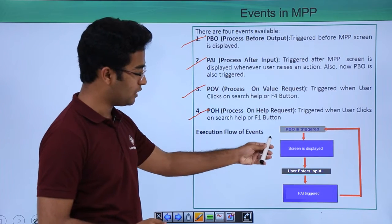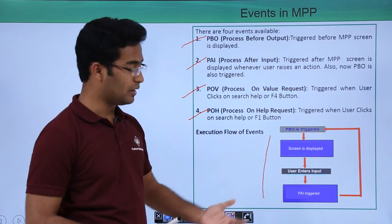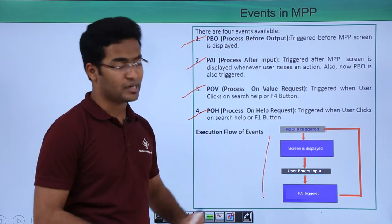So, suppose this is a flow chart here that is first the PBO is triggered then a screen is displayed and then user enters some input then our PAI is triggered.